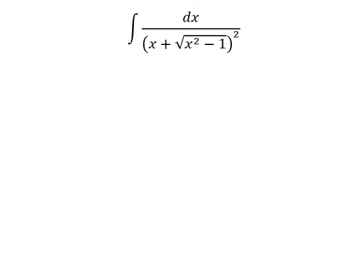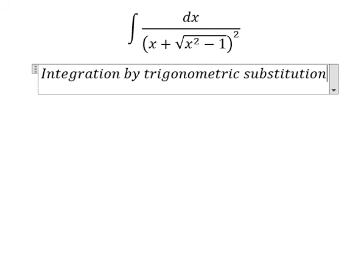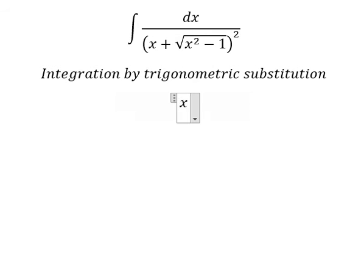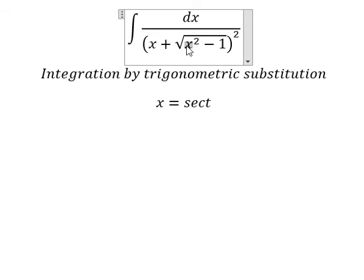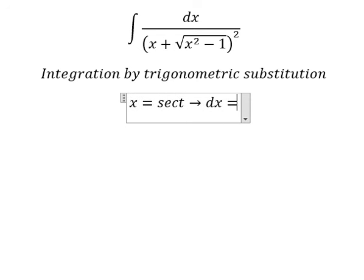Hello everybody. Today I want to talk about calculus. The topic is about integration, and I want to show you how to answer using trigonometric substitution. I will put x equal to sec(t), because if I put this, we have sec²(t) minus one, which we change to tan²(t), and later we simplify the square root.